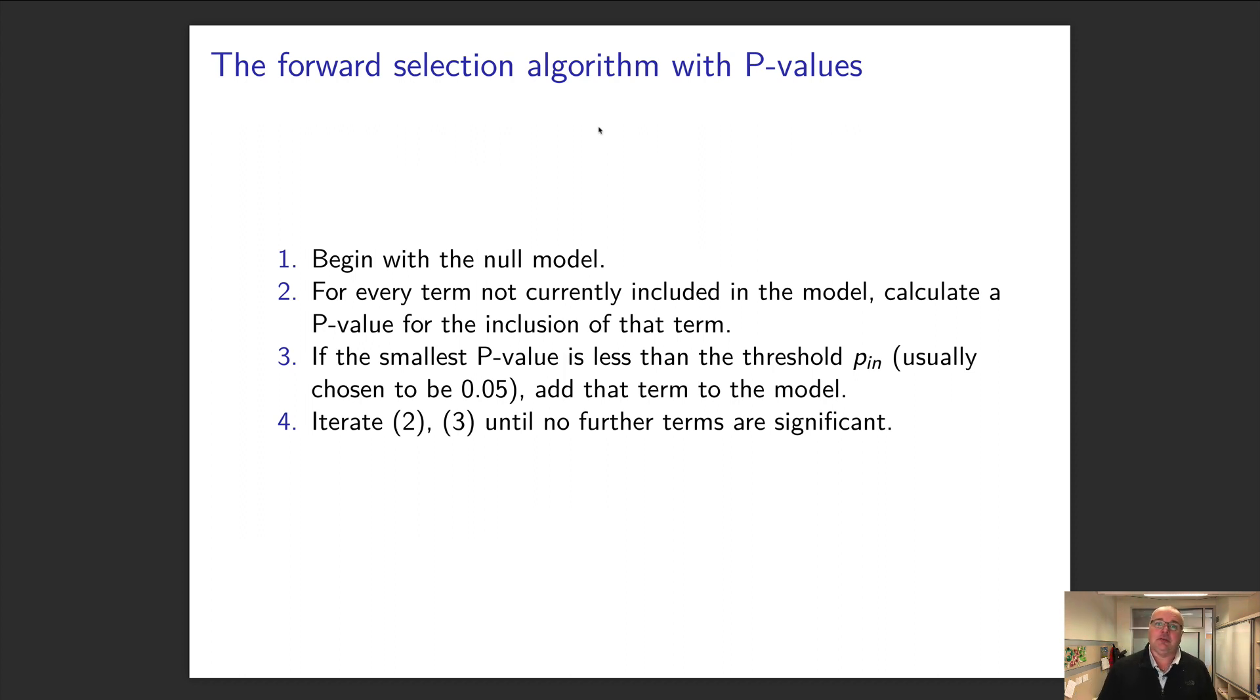We look at the p-value for including each term in the model. You look at the smallest of those p-values, and if that smallest value is less than some cutoff point—usually 0.05—you add that term to the model. You then refit the whole model and look at all your p-values. You keep doing it until the smallest p-value of the things not in the model is greater than 0.05.